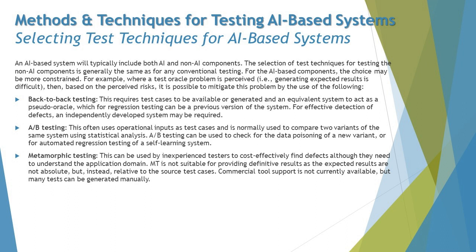Based on the perceived risk, it is possible to mitigate the oracle problem using back-to-back testing, which requires test cases to be available or generated and an equivalent system to act as a pseudo-oracle. For regression testing, this can be a previous version of the system. Back-to-back testing is like keeping a reference system in parallel to generate expected test outcomes.